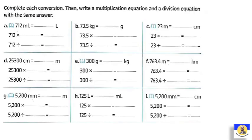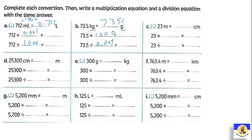Complete each conversion, then write a multiplication equation and a division equation with the same answer. لو معي millilitre وعاوز أعمل change into litre: إما divided by 1000 أو multiplied by 0.001. So it will be 0.712. If I want to change from kilogram to gram: multiply by 1000 أو divided by 0.001. الأنصر بتاعنا يطلع: 73500.